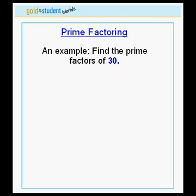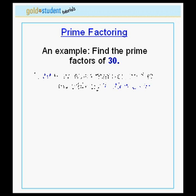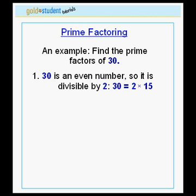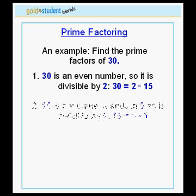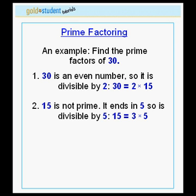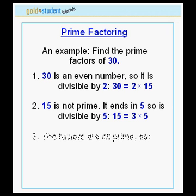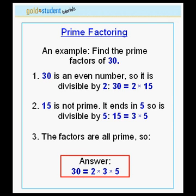Let's do an example. Let's find the prime factors of the number 30. First of all, we notice that 30 is an even number because it ends in the digit 0. Therefore, it is divisible by 2. We can write 30 as 2 times 15. 15 is not prime — it ends in 5, so it is divisible by 5. 15 is 3 times 5. All of our factors are prime, so the prime factors of 30 are 2 times 3 times 5.